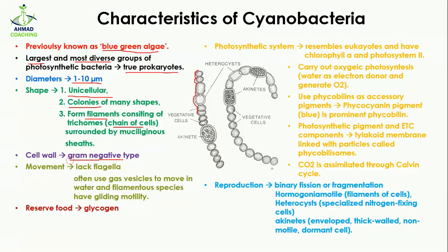The cell wall in cyanobacteria is of gram-negative type. When we talk about movement, these cells lack flagella, which are normally present in bacteria. In cyanobacteria, movement often takes place by gas vesicles, which help them move in water. Filamentous species have a gliding movement because of their filaments.